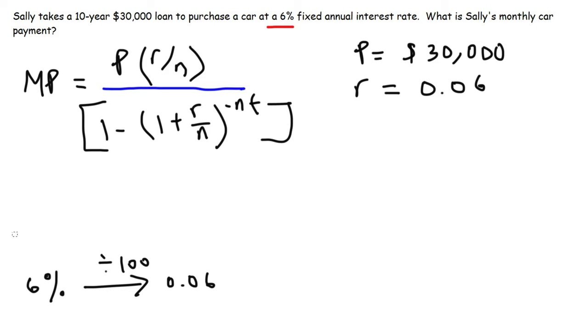Now the next thing that we need is n and t. We know that n is 12. Now what is t? t is basically the term of the loan, it's the time in years. And since this is a 10-year loan, t is going to be 10 years.